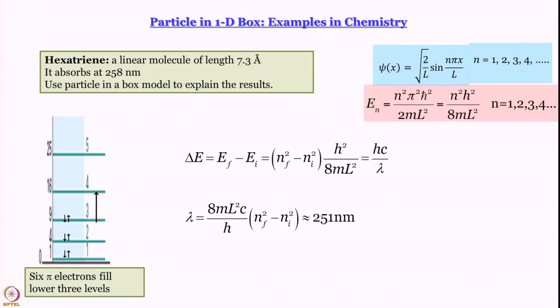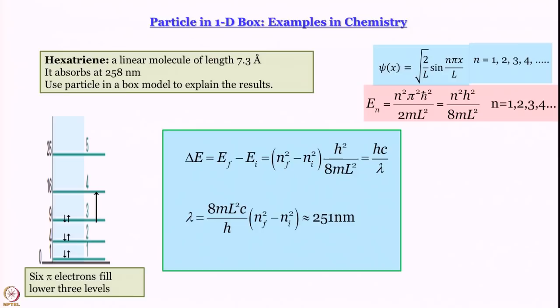The experimental result is 258 nanometers. Are they exactly the same? No. Are they close? Yes. So particle in a box, upon comparison with the experimental value, yields an okay result. We can say it is a good first approximation but definitely not the last word. The repulsion by other electrons and the consequent screening does not exactly offset the nuclear attraction, so it may be a good starting point but it is definitely not the end.